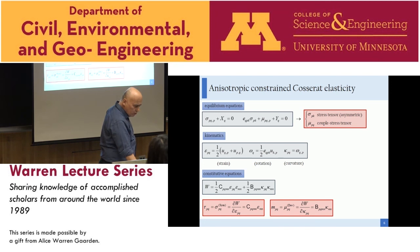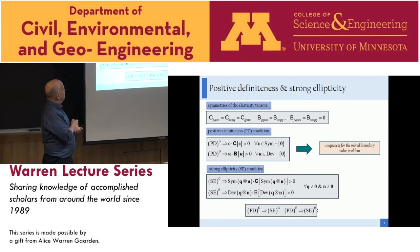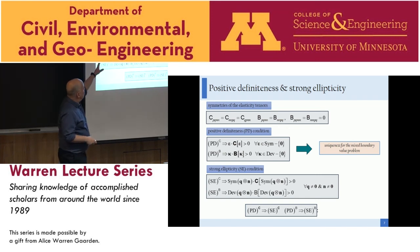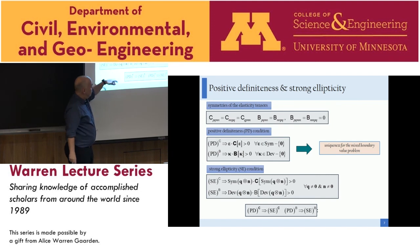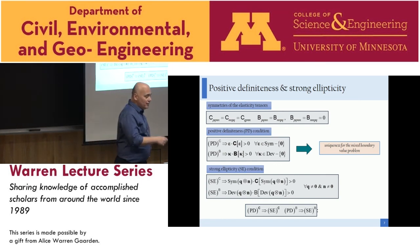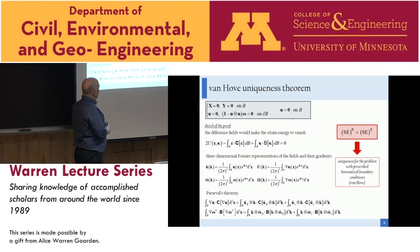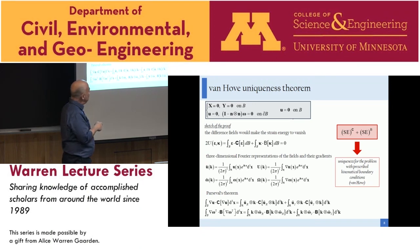To speak of material instabilities we need to define some concepts. The easiest is positive definiteness and strong ellipticity of the constitutive operator. Positive definiteness requires both tensors C and B to be positive definite, implying uniqueness for the mixed boundary value problem. Strong ellipticity allows us to prove the van Hove uniqueness theorem, which implies uniqueness for the problem with prescribed kinematical boundary conditions.